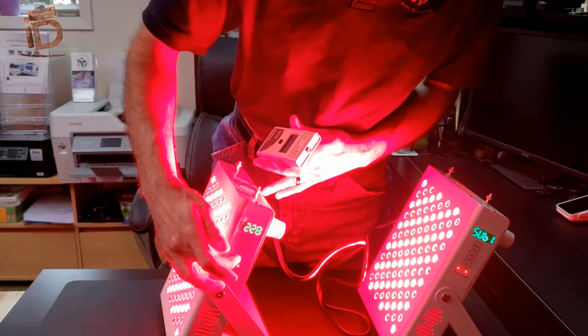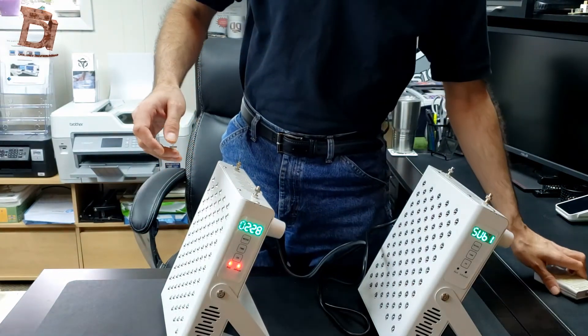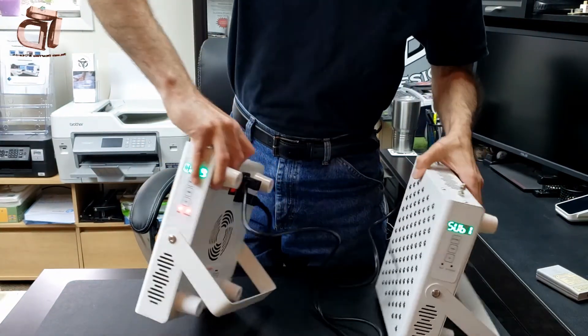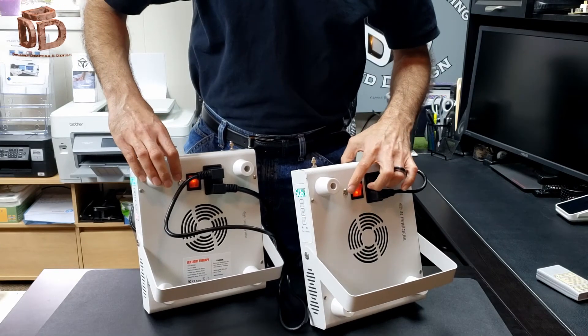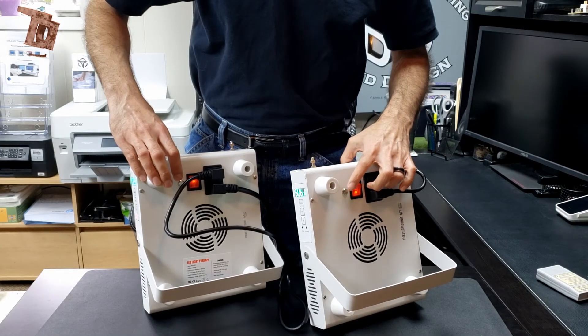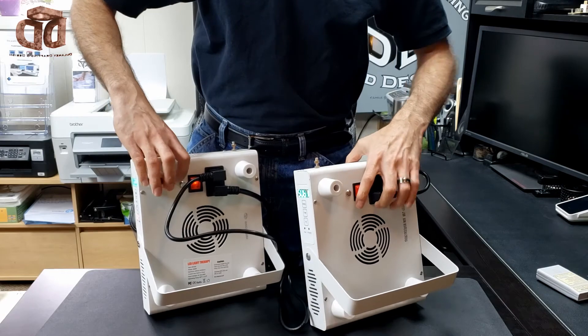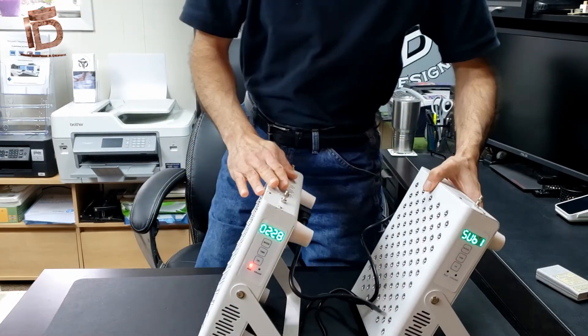So it's that easy to daisy chain the units together. All you need to do is connect the power cords in that fashion and have the smaller button depressed on the follower panels and they will follow the signal from the main panel here.